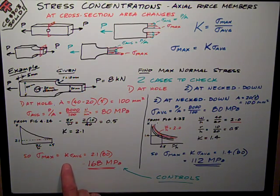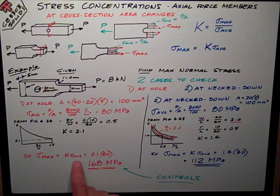So therefore, my sigma max is K times sigma average, 2.1 times 80 is 168 megapascals.